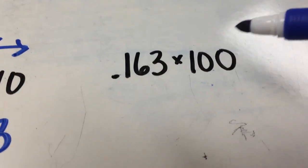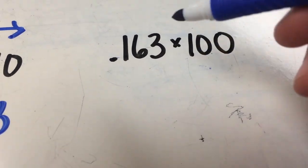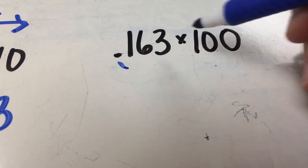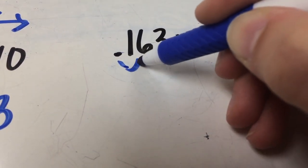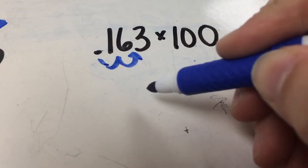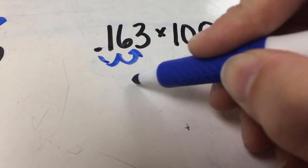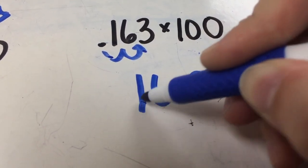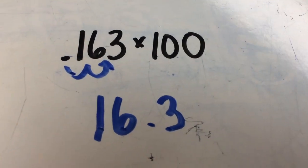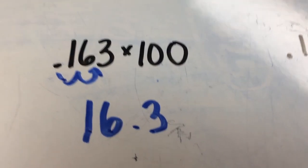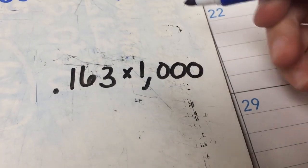So let's try it over here. 0.163 times 100. We have two zeros here, so we're going to bump it one, two places. So my decimal needs to go between the 6 and the 3, so my new number is going to be 16 and 3 tenths. And that is the answer to 0.163 times 100. If you don't believe me, you can just find a calculator or do the long math, but I promise it's true.